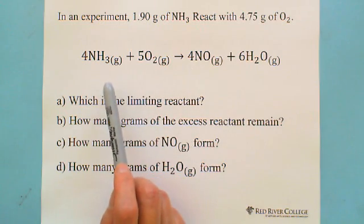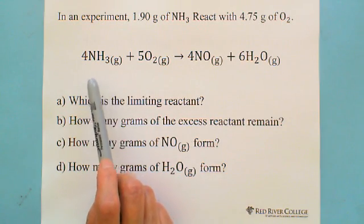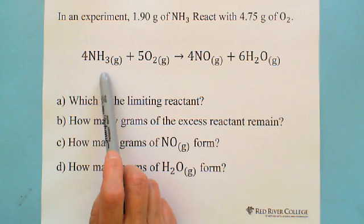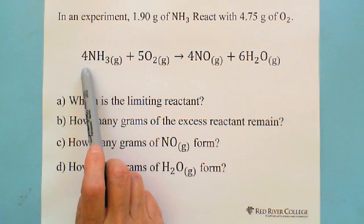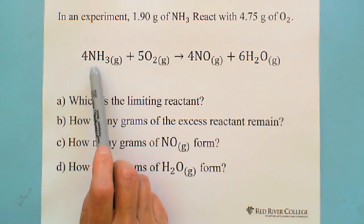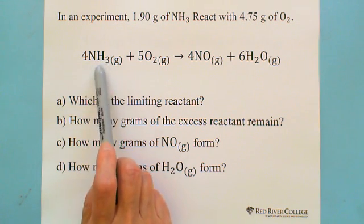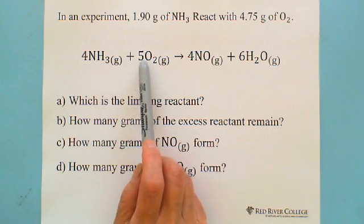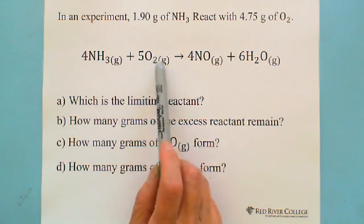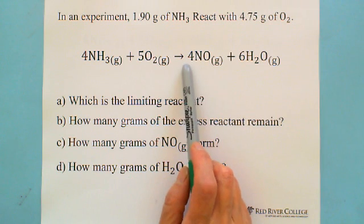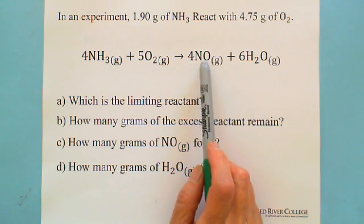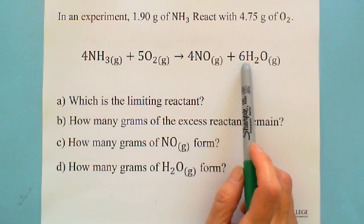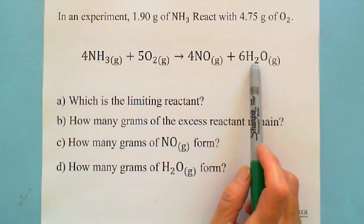So the ratio — from the previous video, you can see we are always focusing on the ratio. 4 moles of NH3 need 5 moles of oxygen to produce 4 moles of nitrogen monoxide and 6 moles of water vapor.